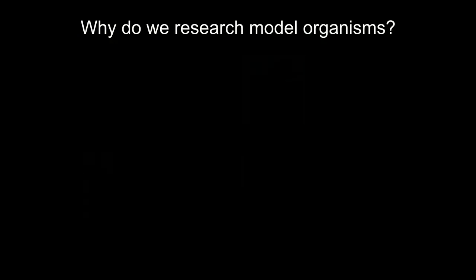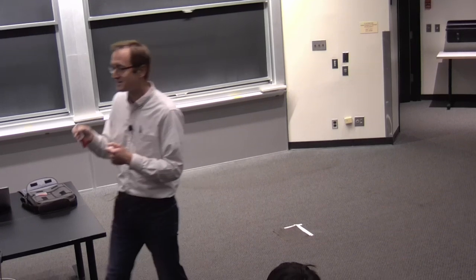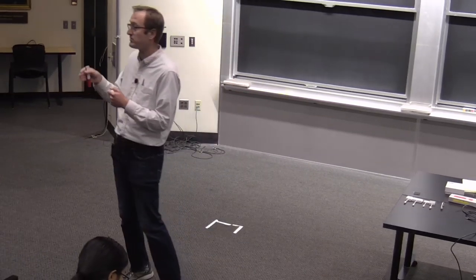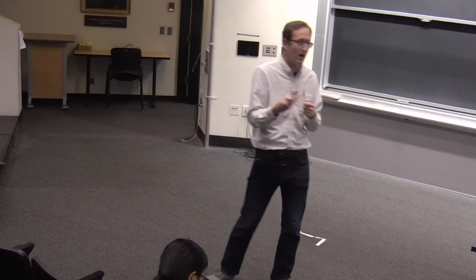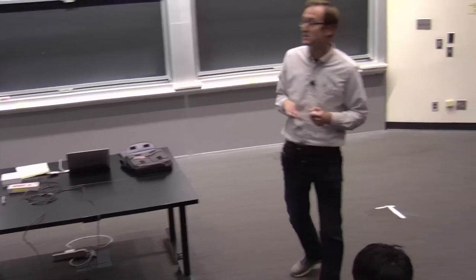So why is it that we research these model organisms? There are some practical reasons. Most of them are fairly small, and they're easy to house large numbers of them in a lab. They're often cheap to house and work with. Also, they develop fast. And especially when we consider genetics, the rate-limiting step in genetics research is the time it takes from the conception of an organism to the time that organism can reproduce sexually. So these model organisms reproduce very quickly, which accelerates the pace of research.